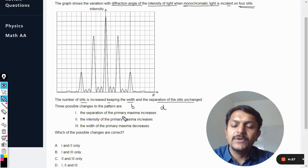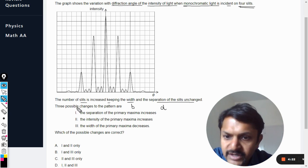Only that the number of slits are increased, like they are just added on the top of them and the bottom of them, so more number of slits are there now. So which of the possible changes are correct?